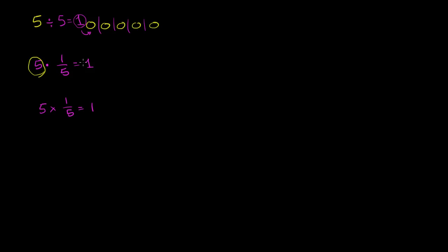If you were to actually multiply this out, if you actually take five times one fifth, this is equal to five over one times one over five. You multiply the numerators, five times one is five. Multiply the denominators, one times five is five. So you have five fifths, and five fifths is the exact same thing as one.